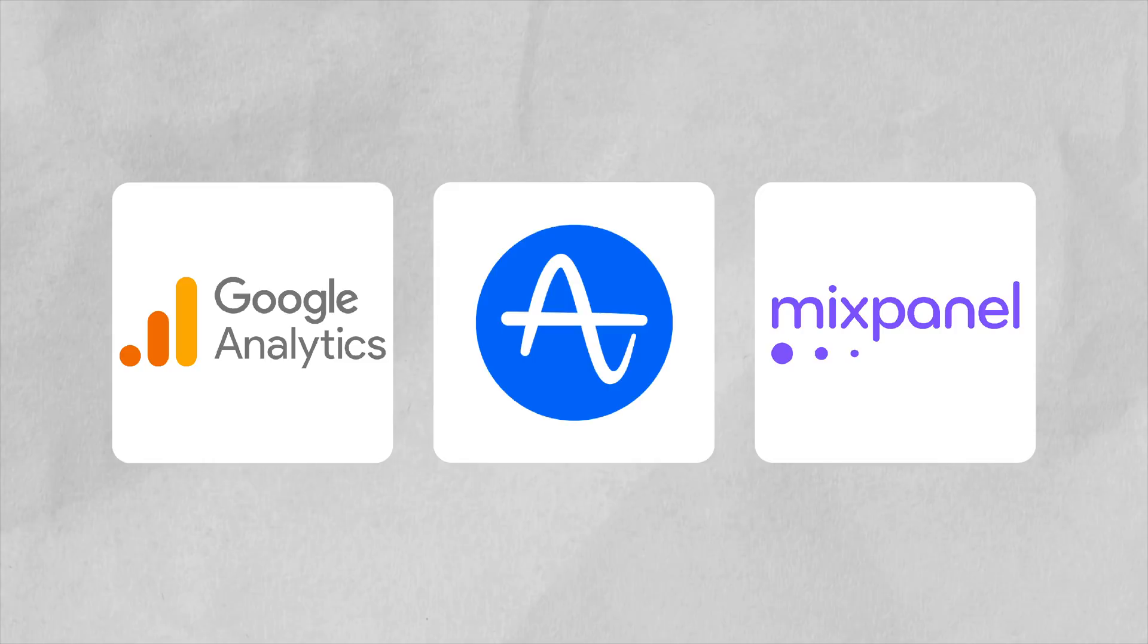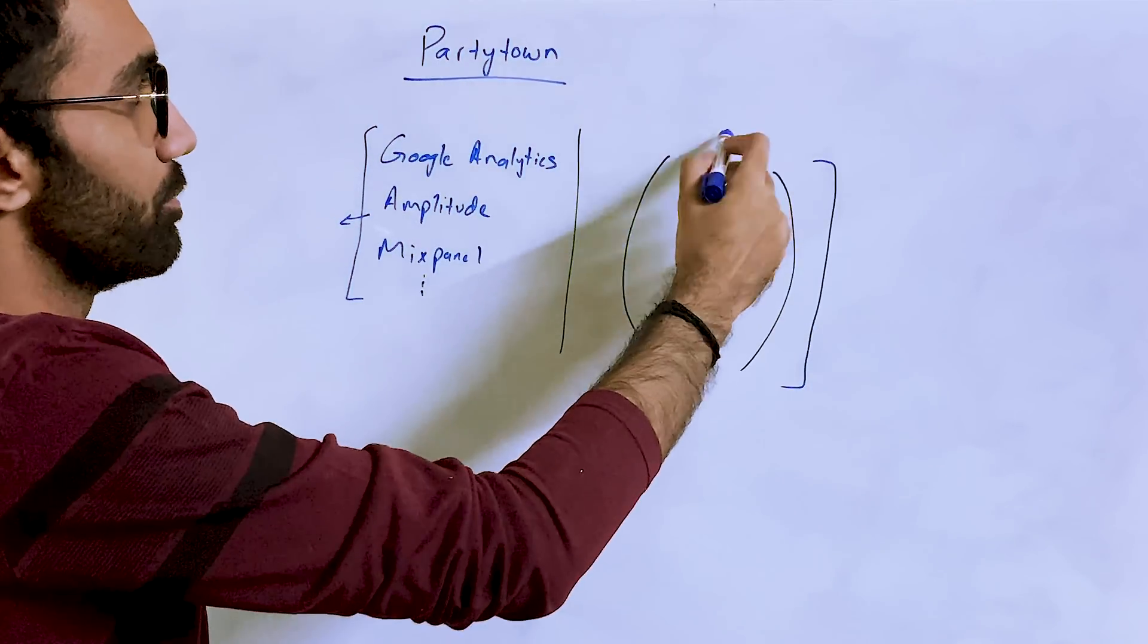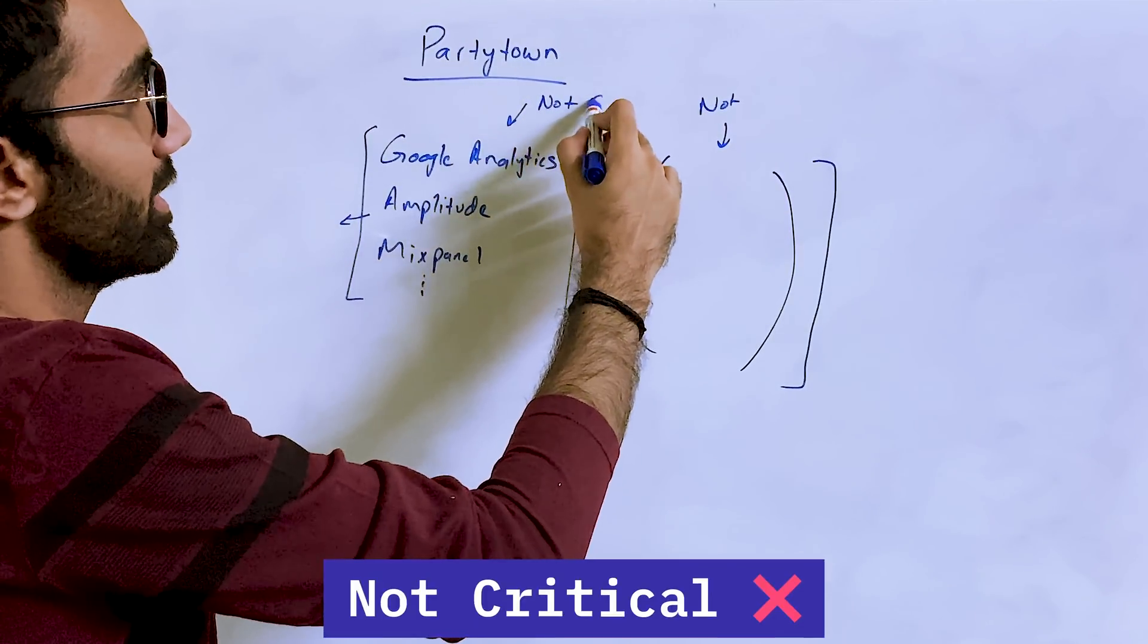So all of these softwares are actually tracking software of some sorts for analytics and data. There could be another category of JavaScript which you're running which might not be that important. So these softwares are not critical.